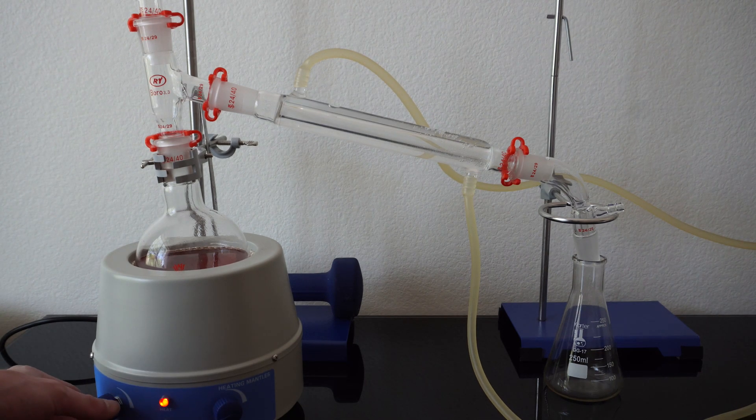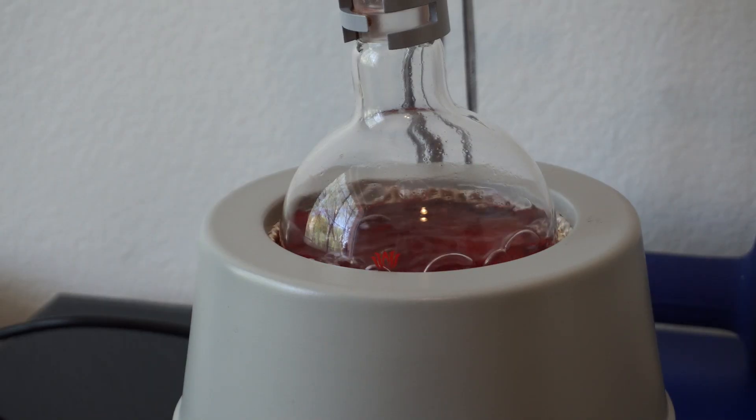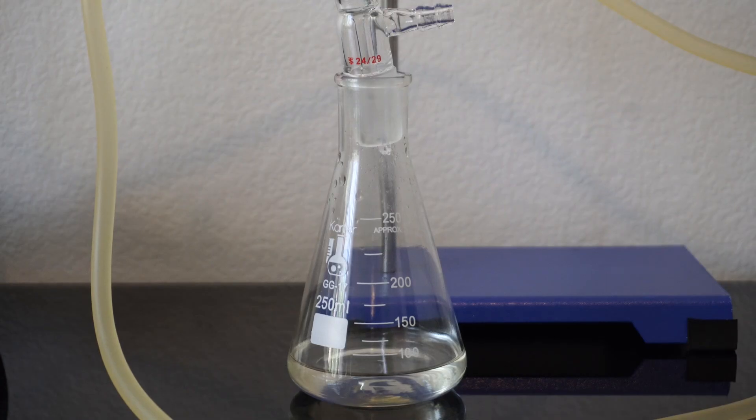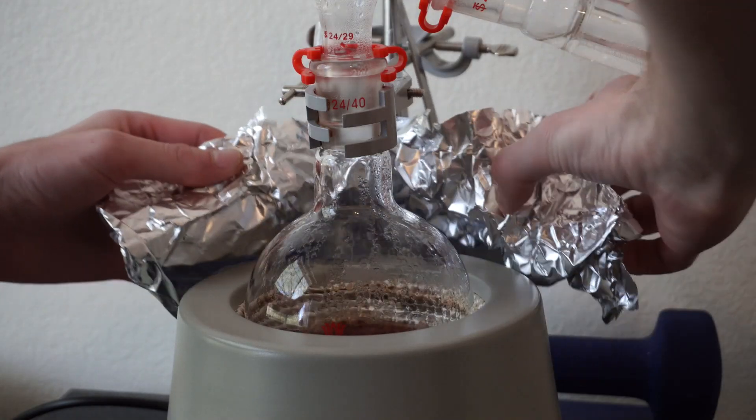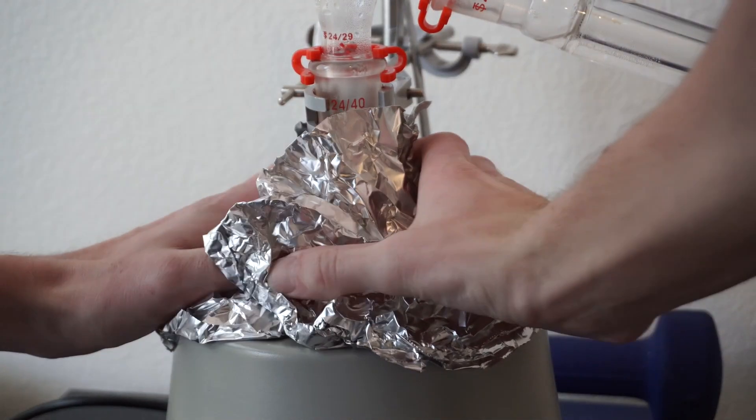After a while, we see the rose water be separated and it is crystal clear. I then wrap the boiling flask in tinfoil and turn down the heat so I do not damage the rose oils and possibly lose smells.